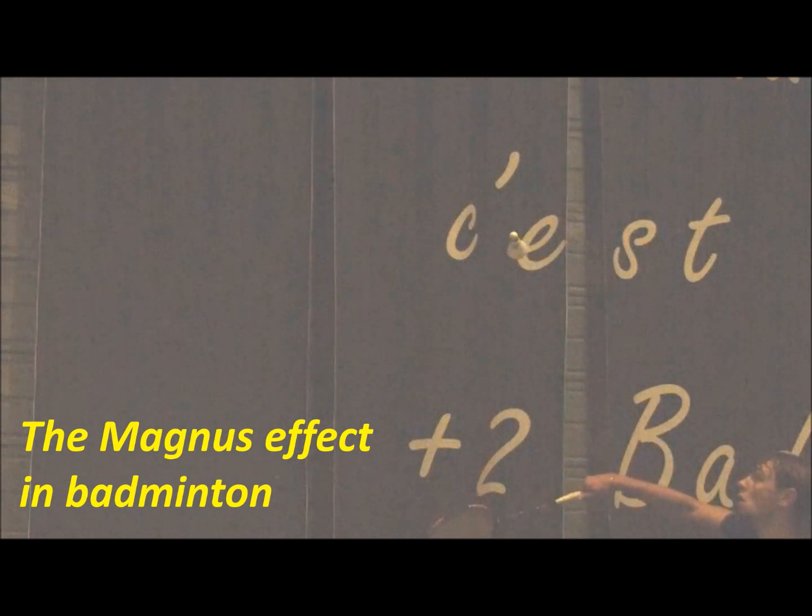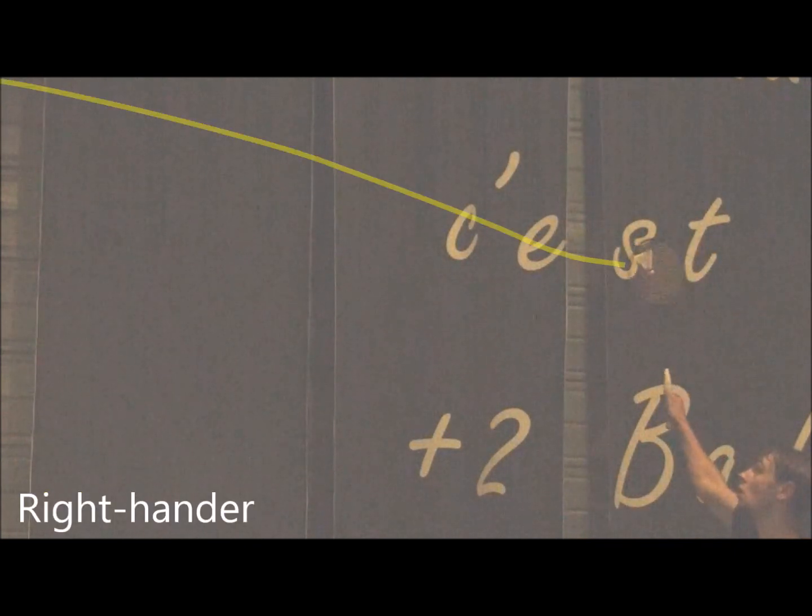Look at what happens to the shuttlecock right after a slice shot. After impact with racket, it is spinning perpendicular to its velocity, and then it's lifting up.